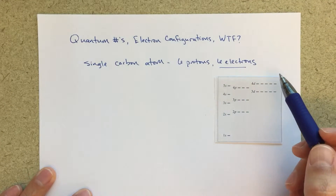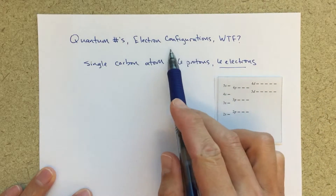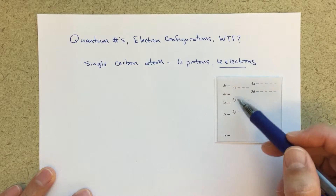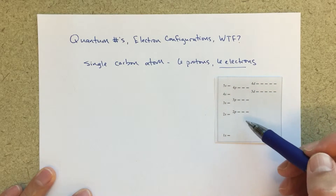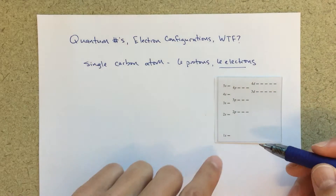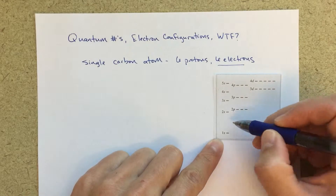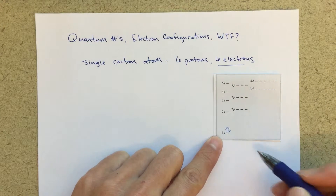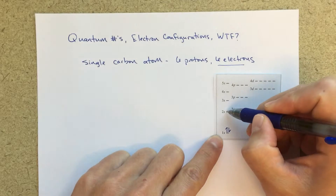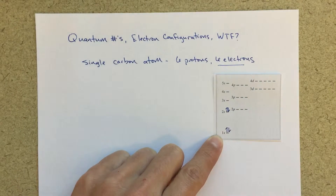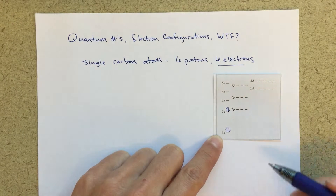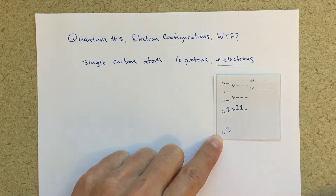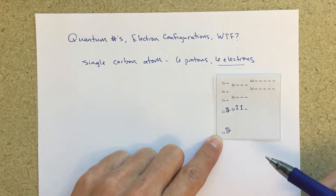If I want the electron configuration for carbon, I'm going to fill those six electrons into this table. I start at the bottom — that's the lowest energy. The first two electrons fill into the 1s orbital. The next two electrons fill into the 2s orbital — two electrons per orbital — and then the last two electrons fill into the 2p orbital.